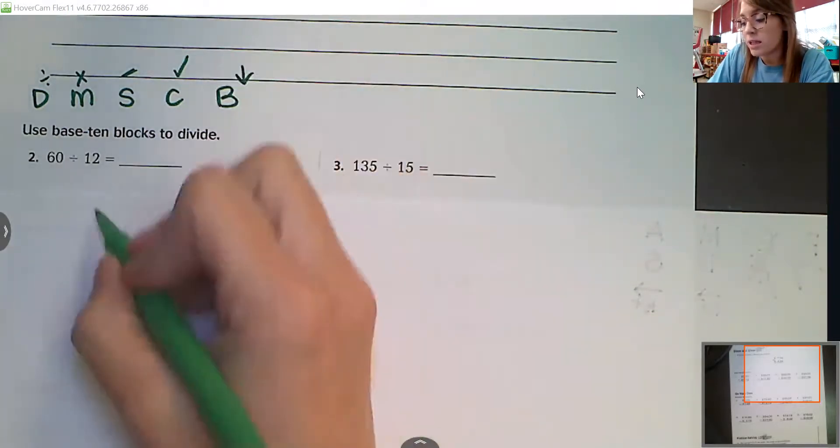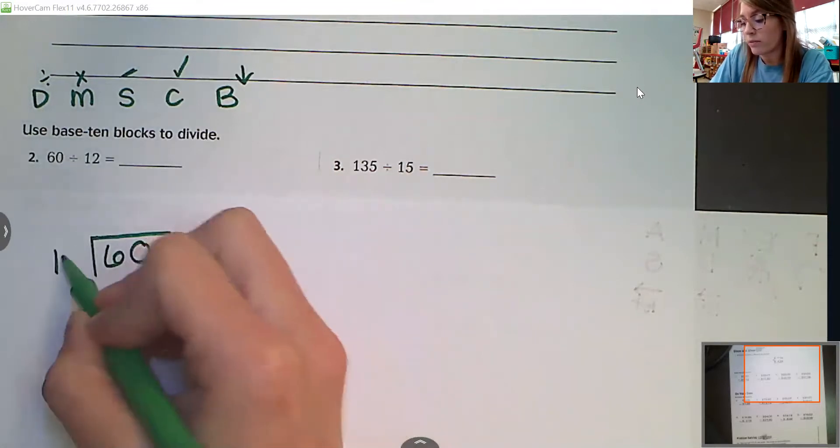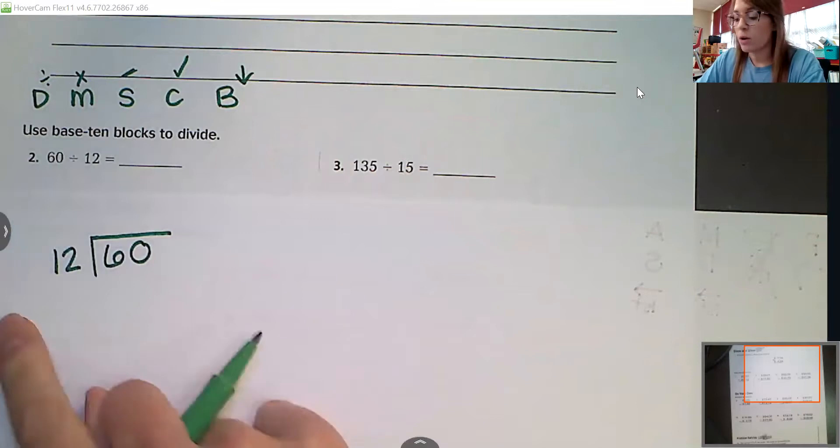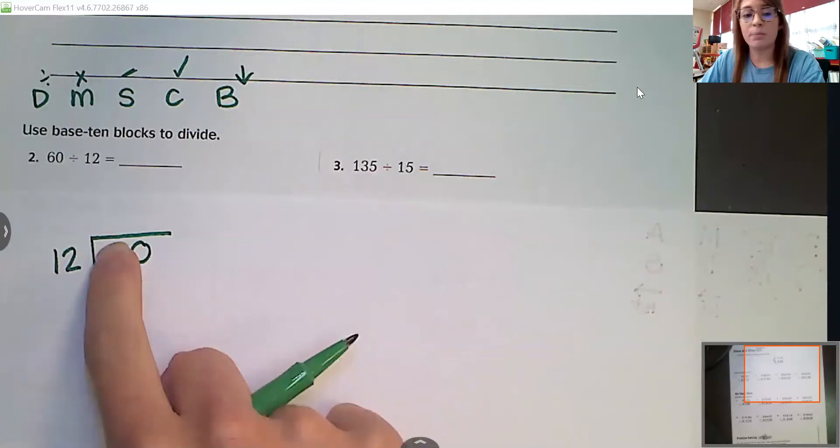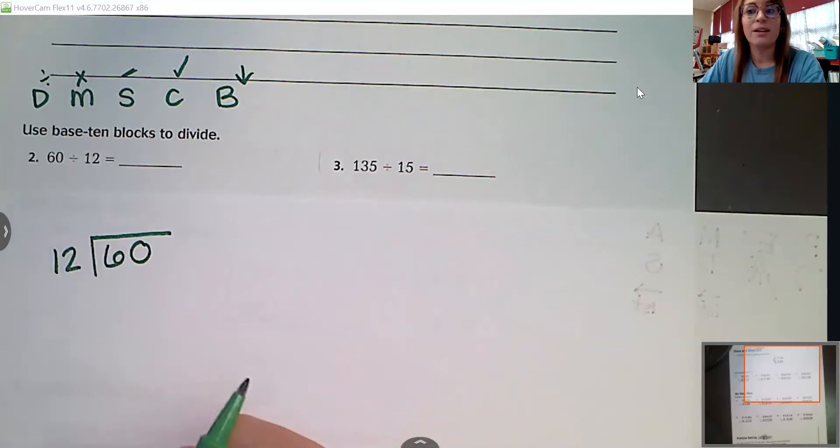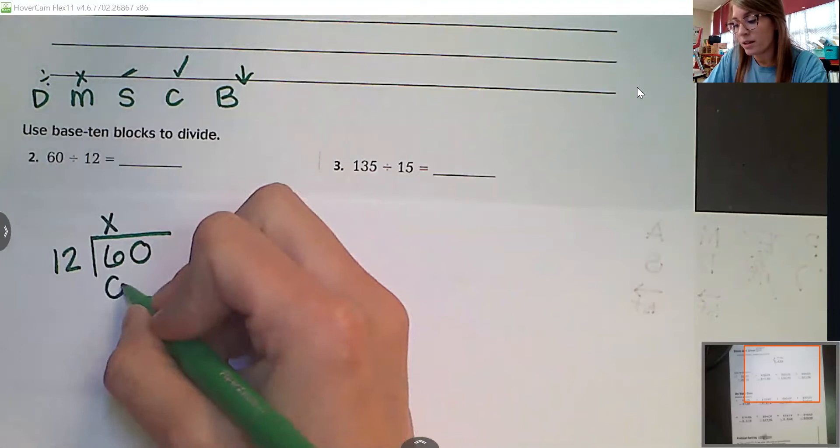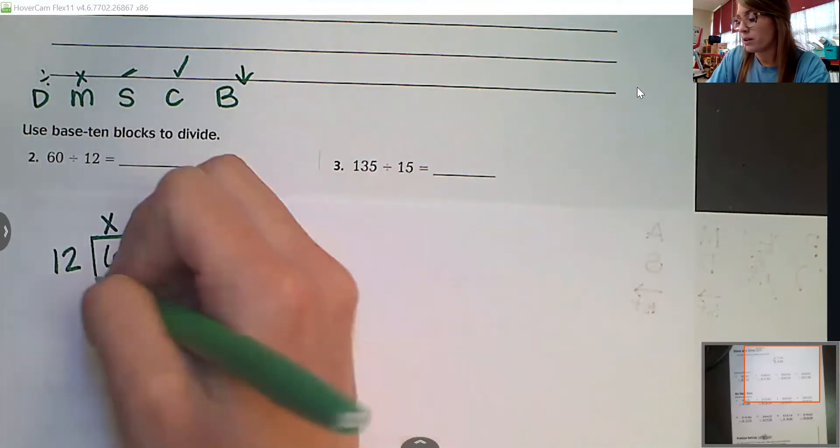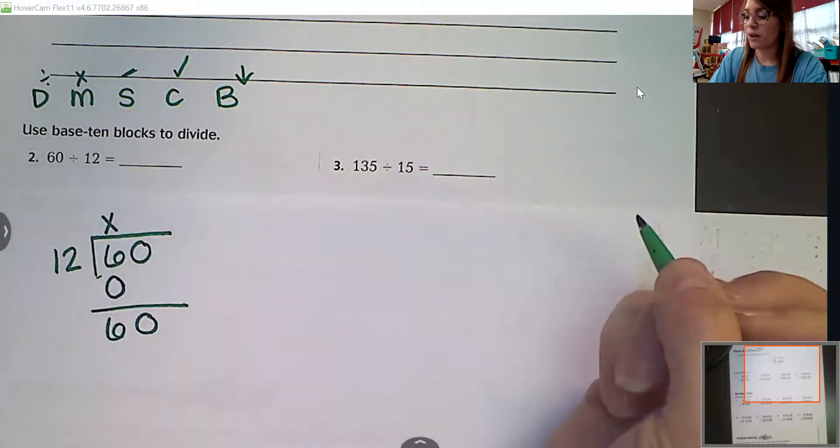So 60 divided by 12. We look at 12, can 12 go into six? No, it cannot. So what did we put here as a placeholder when we were dividing? Good, an X. So I'm going to put an X there. Zero. If I subtract, I've still got 60.